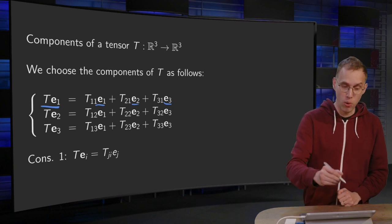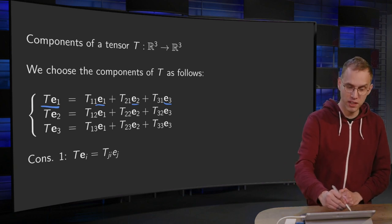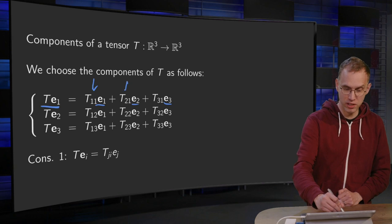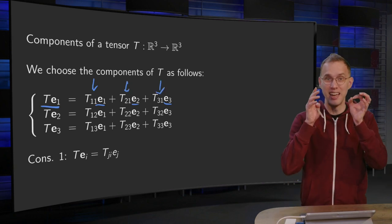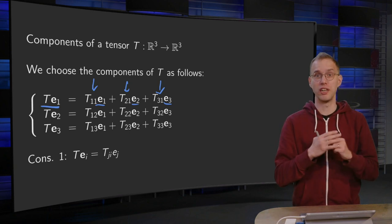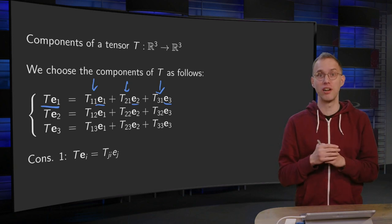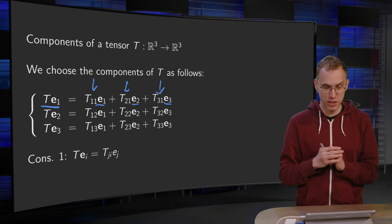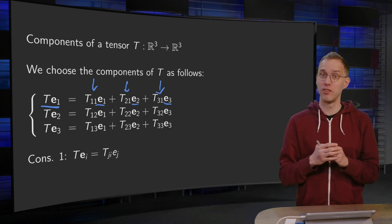And then we call these components of TE1, T11, T21, and T31. That is the choice we make. So that's a choice here. That is how we choose our components T11, T21, and T31.